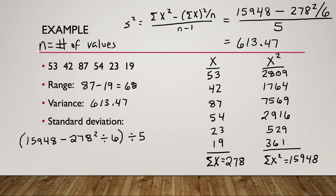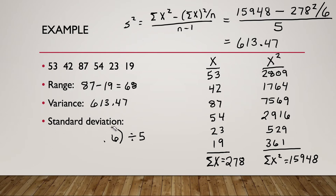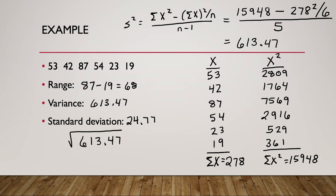Remember, standard deviation is found by taking the square root of the variance. So once you have the variance, finding the standard deviation is not too difficult. We take the square root of 613.47, and you should get 24.77. A standard deviation of 24 is pretty large, telling us the numbers are fairly spread out and not close to the mean.